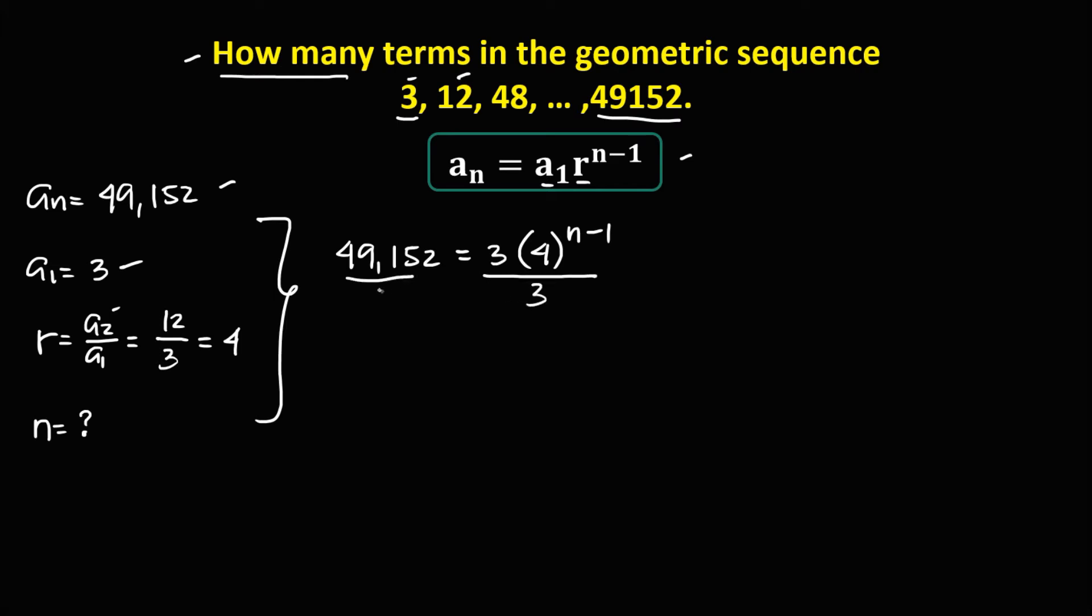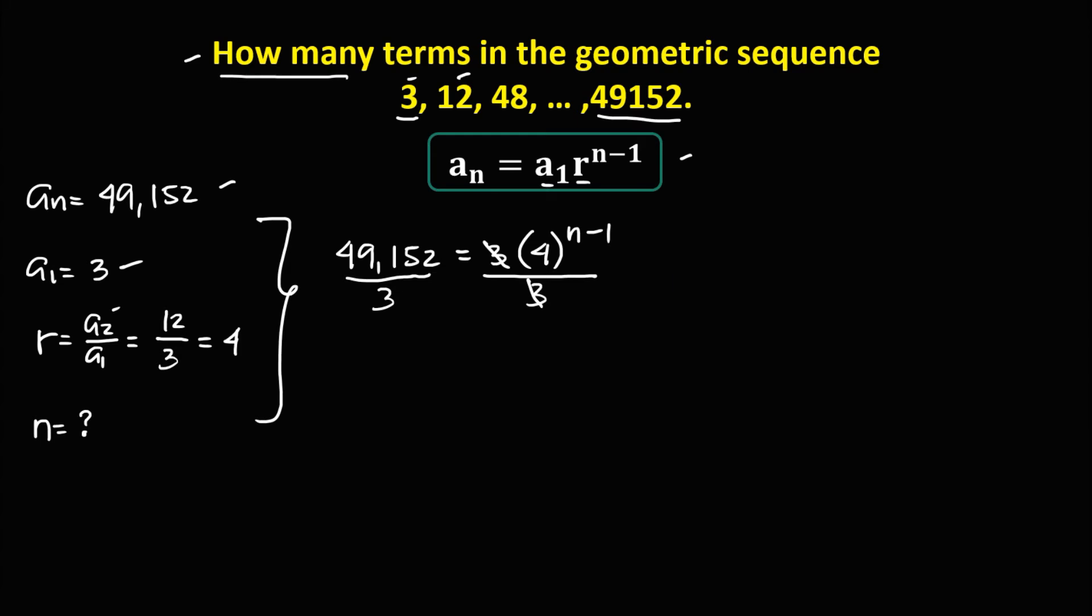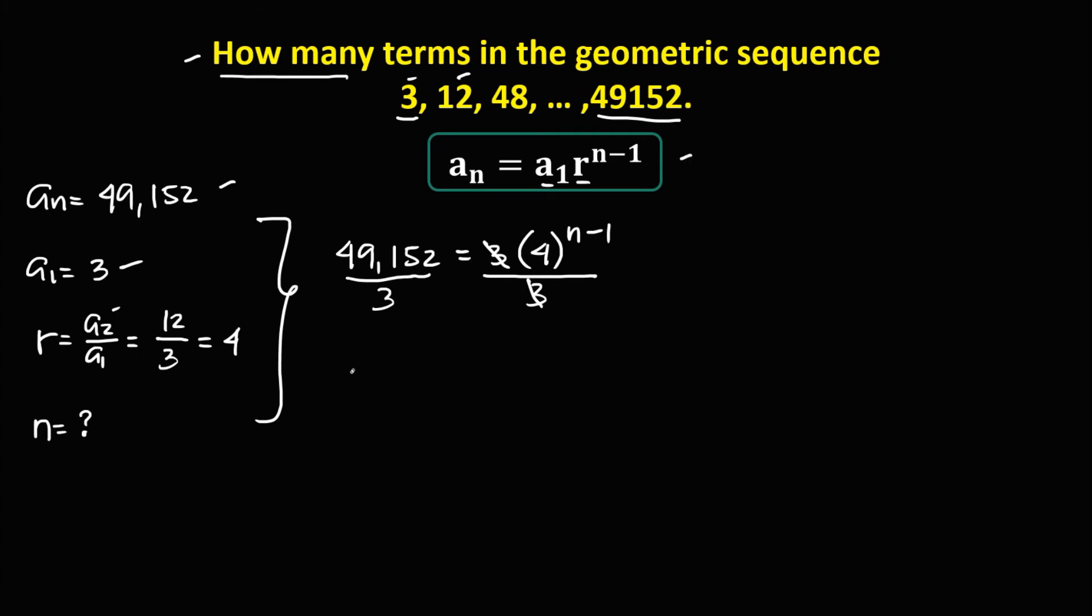Divide both sides by positive 3. So cancel. And 49,152 divide by 3 equals 16,384. So this one is 16,384, then equals 4 to the power n minus 1.